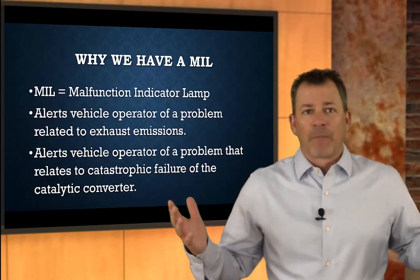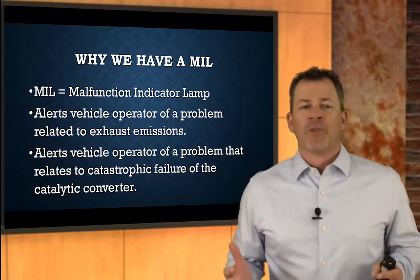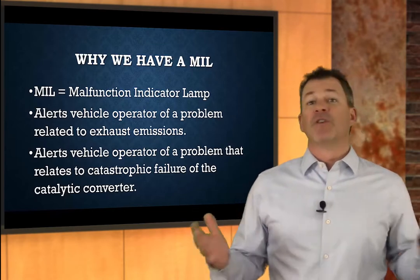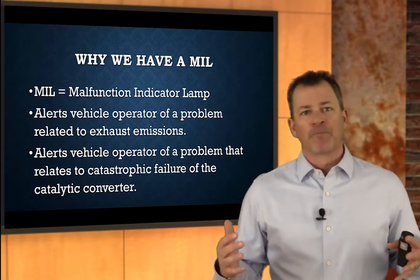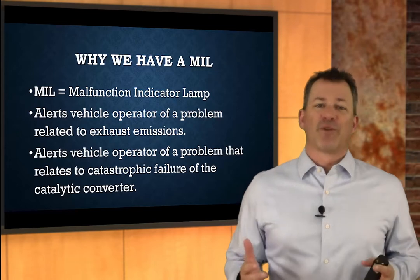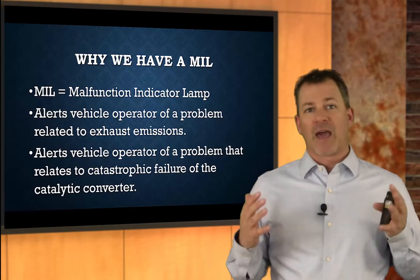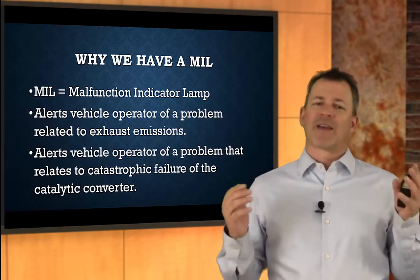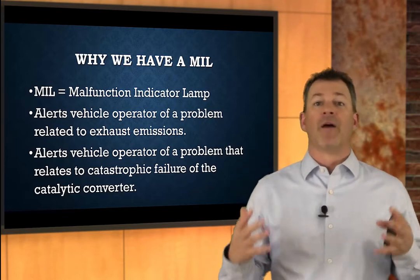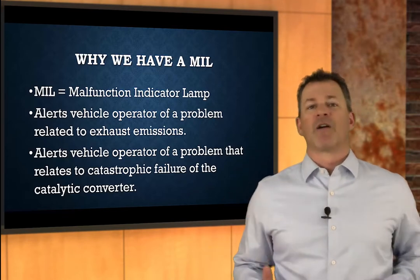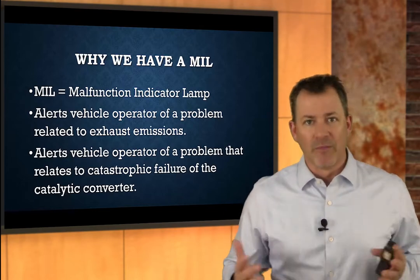Why do we have a check engine light — or the malfunction indicator lamp, as it's technically called? The reason we have it is it alerts the vehicle operator of a problem related to exhaust emissions, and emissions are a big deal in many parts of the country. It will also alert the vehicle operator of a problem that could relate to catastrophic failure of the catalytic converter, because the catalytic converter is the number one emissions component on the automobile. The federal government wants to protect it at all cost because that's what cleans up the majority of our emissions.